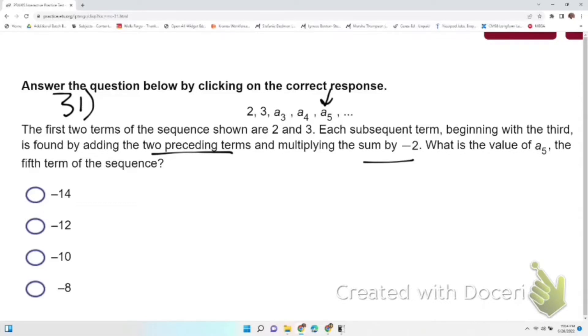So let's add our two numbers together like they say to do. So that's 5, and then multiply that 5 times negative 2. So a₃ is negative 10.